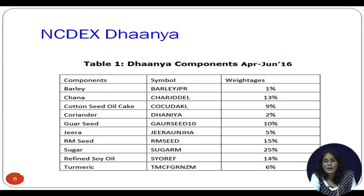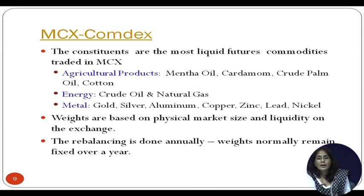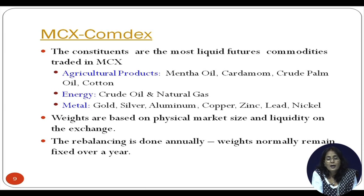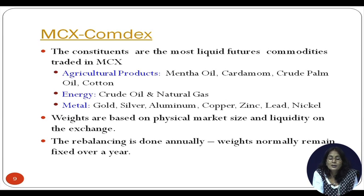Sugar currently has the highest weightage of 25% in the Dhania index. Now let us look at the MCX Comdex. MCX Comdex is calculated and reported by the Multi Commodity Exchange. Unlike NCDEX Dhania, which considers only agricultural commodity futures, MCX Comdex does not use a rollover mechanism — it considers all futures prices available for a given commodity futures contract. It is a broad-based index covering agricultural products, energy, and metals.